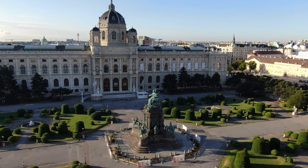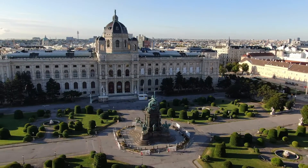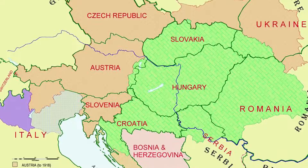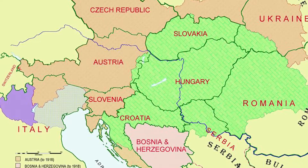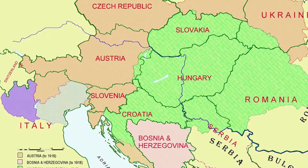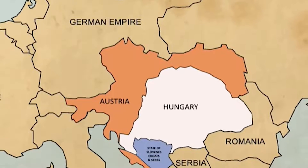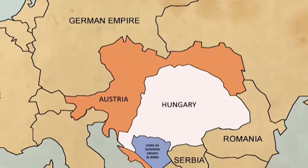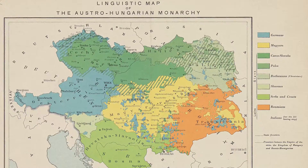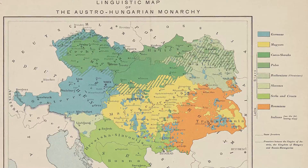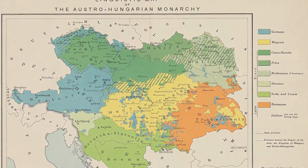But how did this plan come into existence? What did it look like in detail, and why was it never implemented? Austria-Hungary was a multi-ethnic state from the beginning, consisting of a total of 11 nationalities. Despite this, only the Austrians and the Hungarians were truly able to have a say in politics, although they made up just 44% of the population.